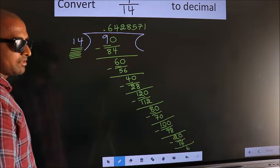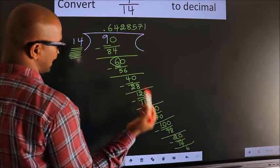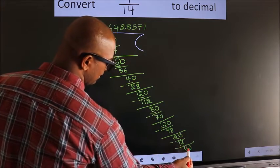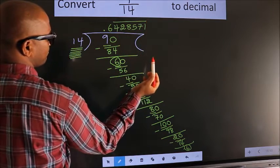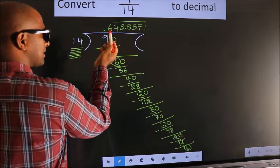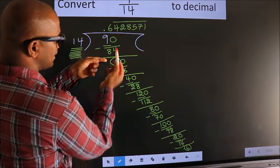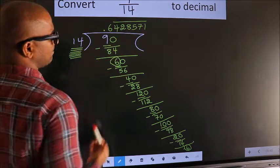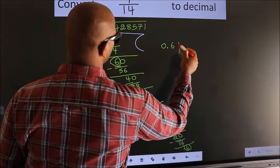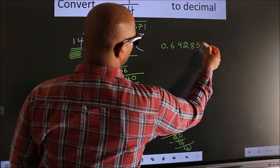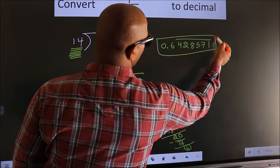Now, here you observe — we had 6 here, and we got 6 again. That means we get a bar on these numbers. We do not get a bar on this number because we have 6 here, not before it. Since 6 is present here, we don't get a bar on this number. Therefore, our answer is 0.6428571 with a bar on the repeating digits. This is our answer.